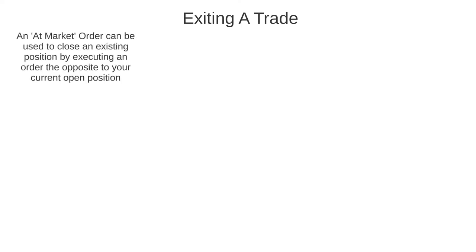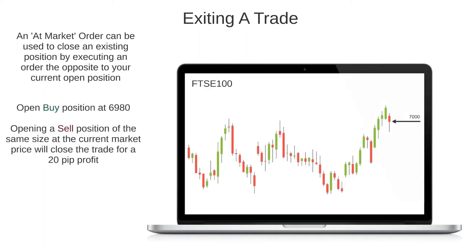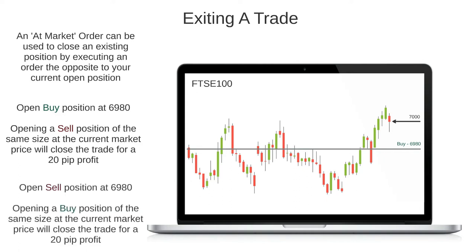Now let's look at how you can use these same order types to exit a trade. The first way to exit a position is to simply close it manually. We do this by using an at-market order, only the opposite of the order that we used to open the trade. So if you had opened a buy position at 6,980 and the market is now trading at 7,000, you can manually close the trade by executing an at-market sell order of the same size, which would leave you with a profit of 20 pips. The reverse can be done to manually close a sell position — if you had sold at 6,980 and the market was now trading at 7,000, you could execute an at-market buy order to close the position, leaving you with a loss of 20 pips.